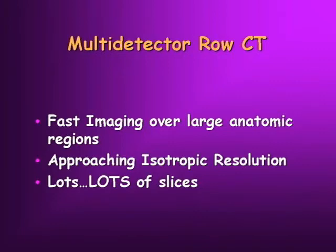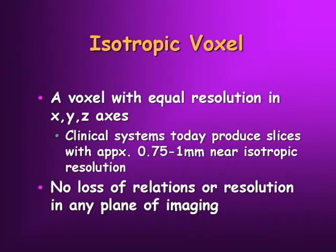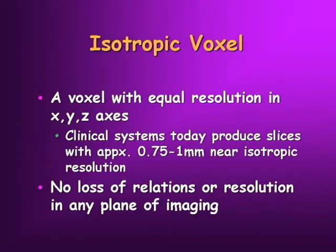And how do you deal with those? So first, the isotropic voxel — that's a voxel with equal resolution in the X, Y, and Z axis. Today's clinical systems produce slices that are near isotropic voxel resolution, a little bit of broadening in the Z axis, but for the most part they're very close. And what that allows you is no loss of the relationships or resolution in any conceivable plane of imaging to acquire that volume of data.